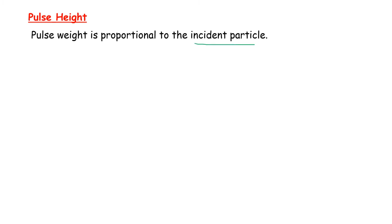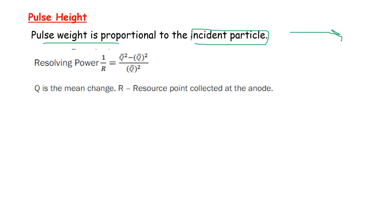Pulse height is proportional to the incident particle. The resolving power 1/R = (Q² - Q̄)² / (Q̄)², where Q is the mean change or resource point collected at the anode. Q² is the mean squared change collected at the anode.